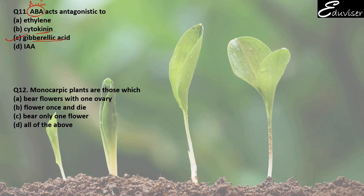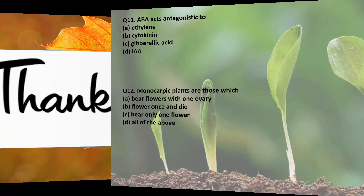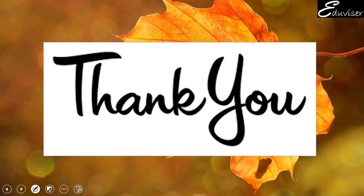Question number 12: Monocarpic plants are those plants that flower just once and then die. In their entire lifetime, they flower only once and then finish. For example, bamboo — it flowers only once in 40 or 80 years, and after flowering it dies. So the answer for question 12 is B. With this, this chapter ends. We will do chapter number 16 next. Bye bye and thank you.